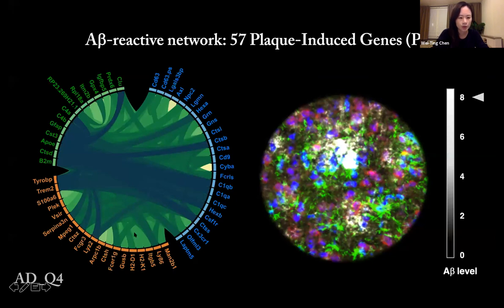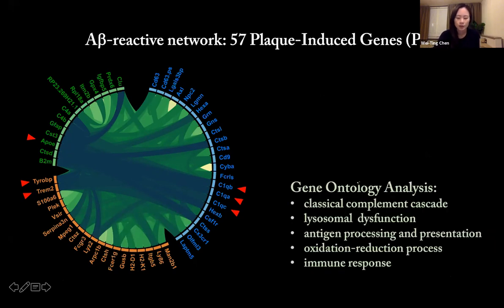Especially this orange cluster starts to bring into the network via TREM2 and TYROBP, with their connectivity to ApoE and C1QA, B, C. We are surprised because this unbiased analysis actually points out one of the most important molecules in Alzheimer's disease. Based on gene ontology analysis, it indicates this network is over-activation of the classical complement cascade. For example, they have C1QA, B, C and C4A, B and CLU. They also have downstream effectors of the complement cascade, like lysosomal dysfunction, antigen processing and presentation, oxidative stress, and immune response.